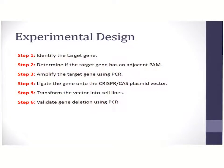These are the steps involved in your experimental design. The first step involves identification of the target gene. The second step is the determination of the PAM sequence, which should be adjacent to the target gene. The third step involves amplification of the target DNA using PCR. The fourth step involves ligation into the CRISPR-Cas plasmid vector.